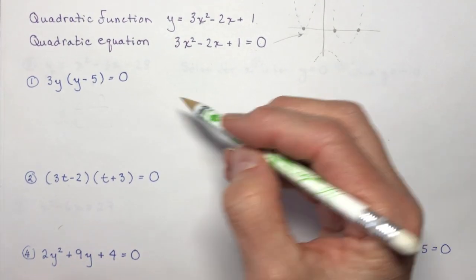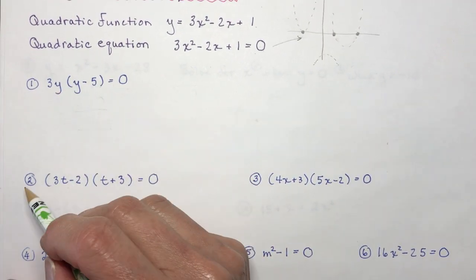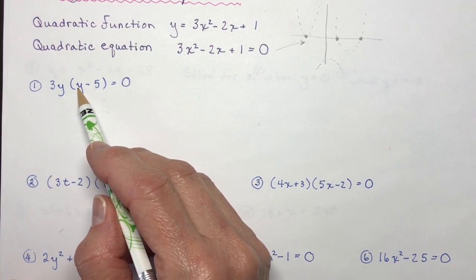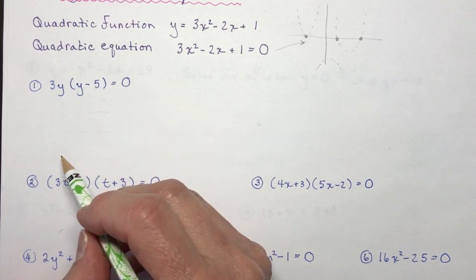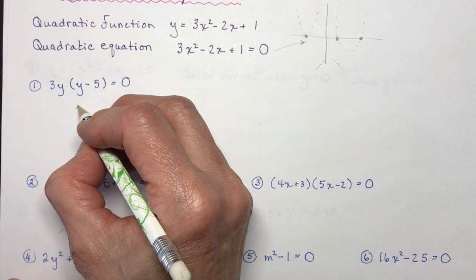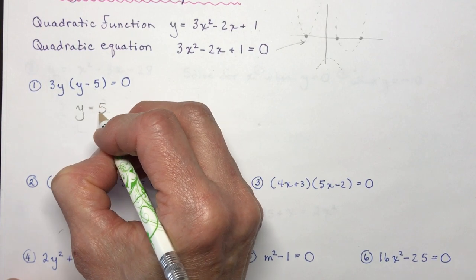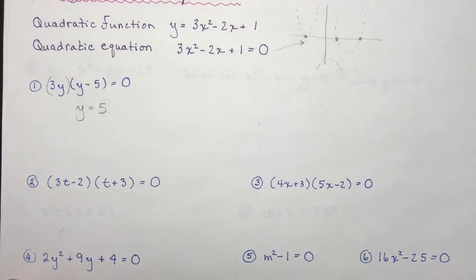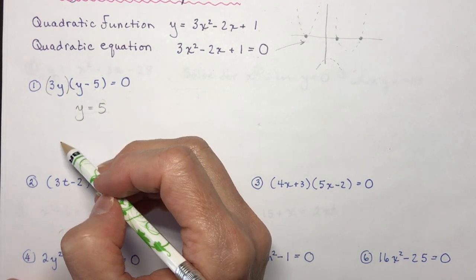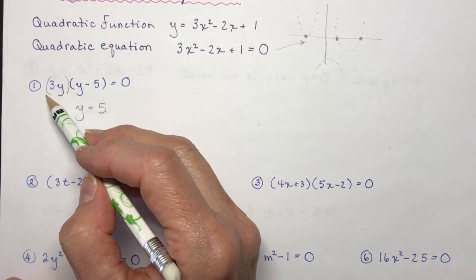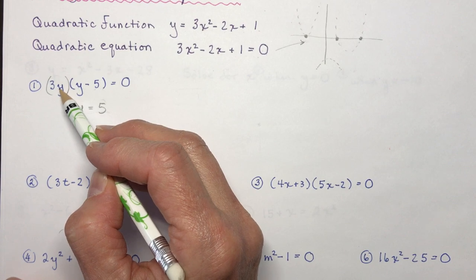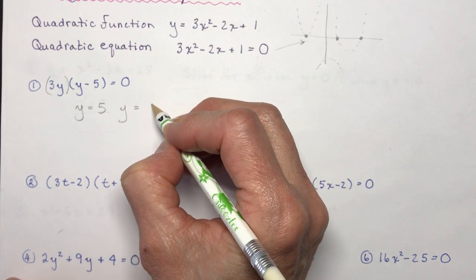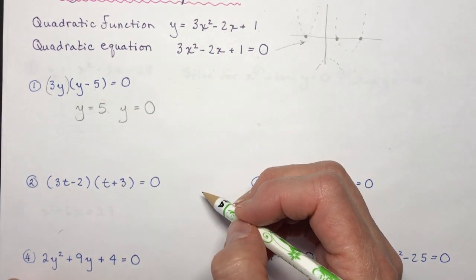If I asked you what makes this equation equal to zero, you could probably tell me: five. If I put in five here, I have three y times zero which is zero. So y equals five is one solution. Another solution: don't forget this one out front — because it says three y, if I put in zero for y I have zero times minus five which is also zero. So y equals five and y equals zero are the two solutions.